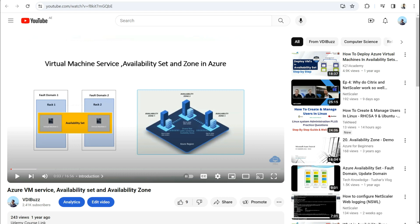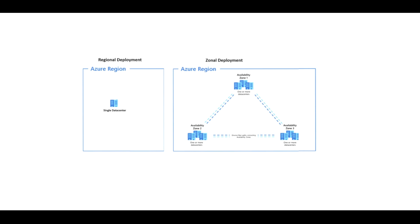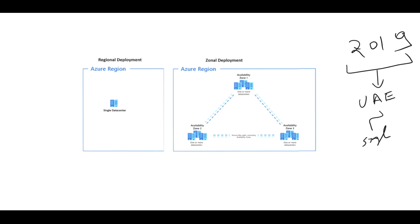You can check out my YouTube video on Azure availability zones and availability sets for more details on SLAs. Now let's see why this feature is important. Microsoft announced the Azure region in UAE back in 2019. At that time, there was no concept of availability zones, meaning the Microsoft Azure data center in UAE had only a single data center — a regional deployment. Any workloads or VMs deployed there would be in a single data center, so a failure would cause an outage.